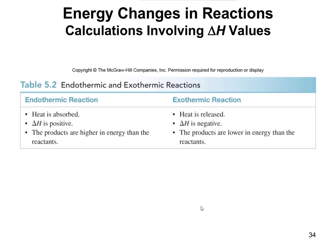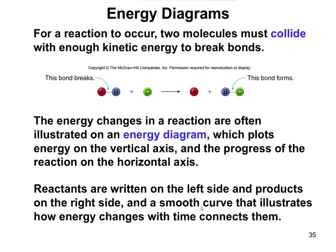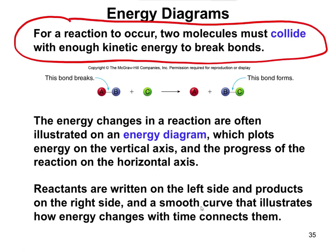Here's a table that breaks down endothermic versus exothermic reactions, reviewing everything we just talked about. Energy diagrams plot energy on the vertical axis and the progress of the reaction on the horizontal axis. For a reaction to occur, two molecules have to collide with enough kinetic energy to break the bonds — molecules are constantly in motion, so they have to collide and hit each other with enough energy to cause bond breaking.